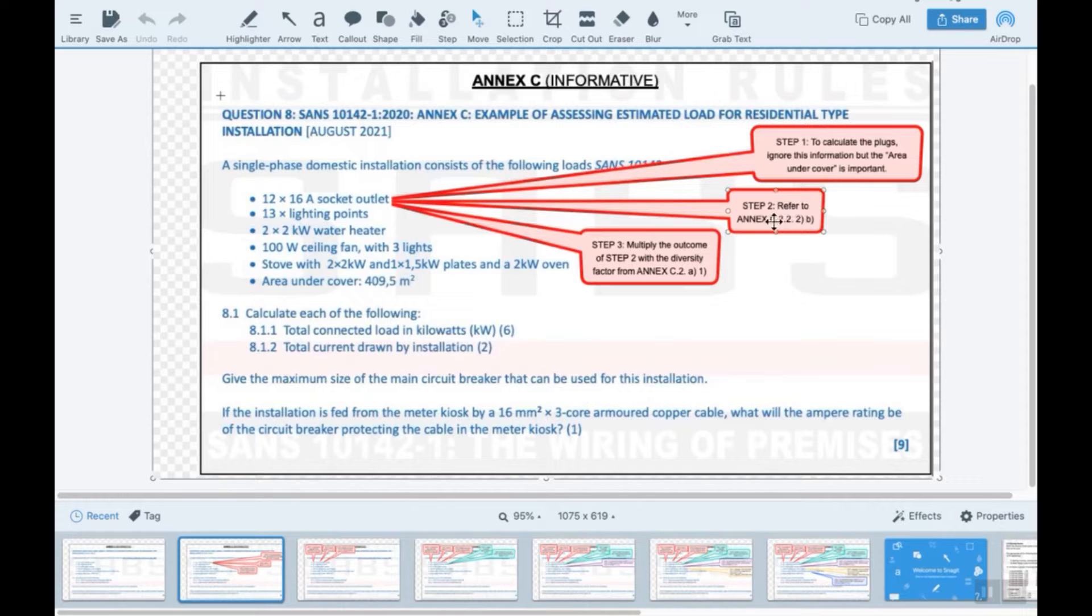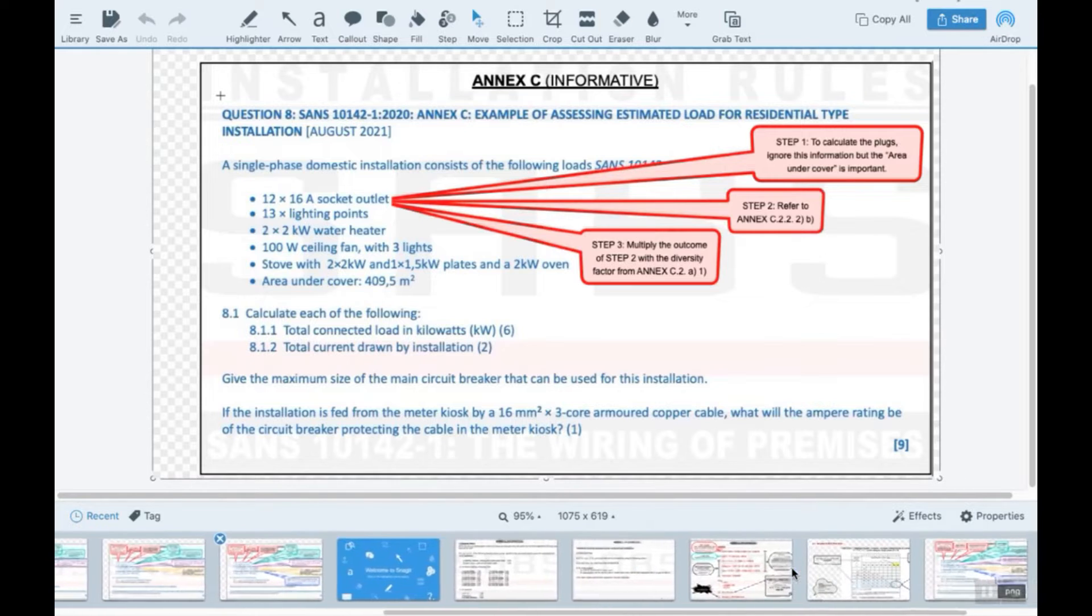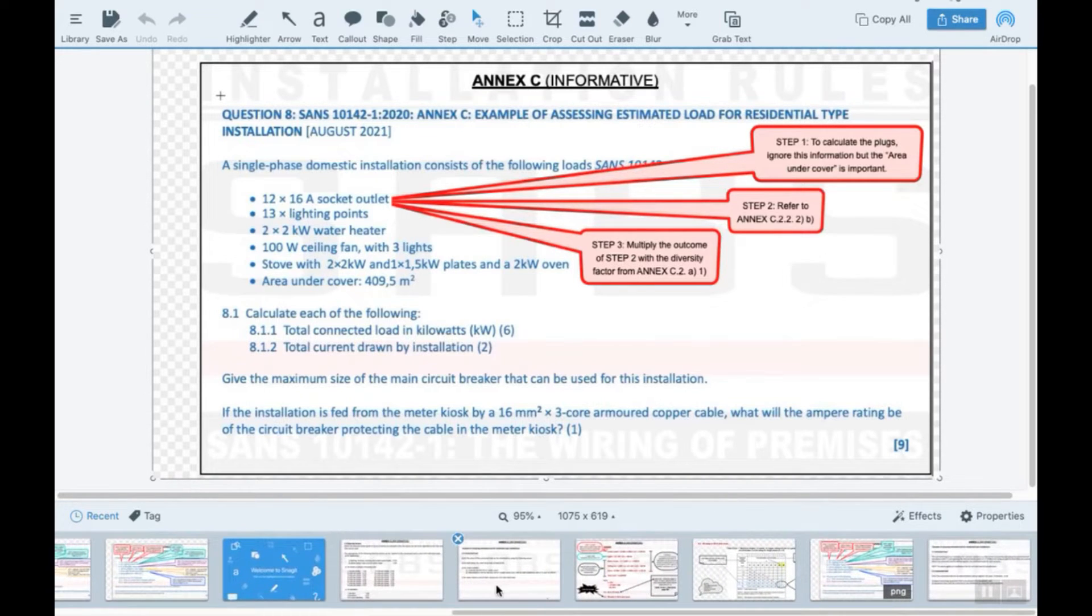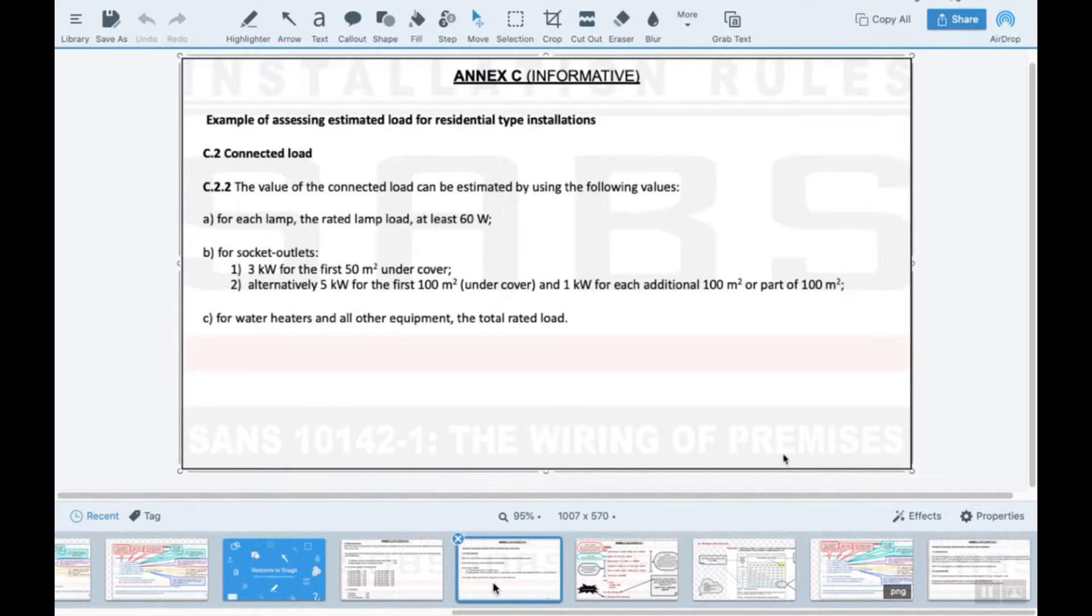So it says here step two, refer to Annex C 2.2B. So C 2.2B, and I need to look at the square meters. I will use this one because I don't have less than a hundred, so I will use this. There's three parts to this: part one is five kilowatt for the first hundred square meter under cover, then one kilowatt for each additional one hundred square meter, or a part thereof would be the third part.